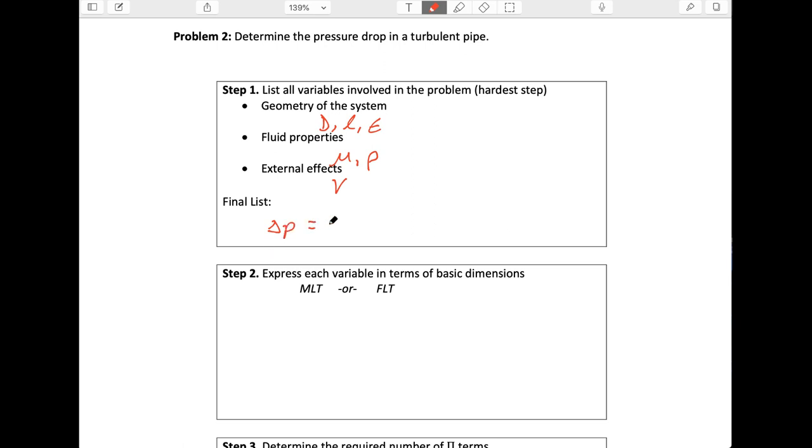And so we're going to write this as some function, unknown function phi of velocity, diameter, length, roughness, viscosity, and density. This is a little sloppy. This is supposed to be an epsilon, not a T. There you go. Second step is to express each of these variables in terms of its basic dimensions.